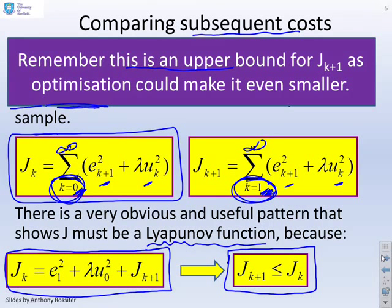And just as a reminder here, this value for J_{k+1} is an upper bound, because we've assumed the tail. When you do an optimization, you may be able to make J_{k+1} even smaller.